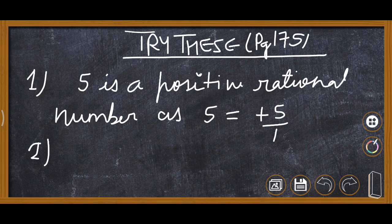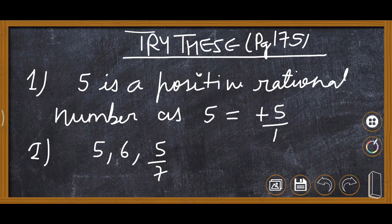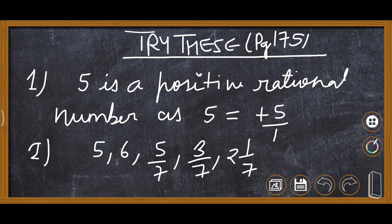And question number 2, list any 5 more positive rational numbers. So we can name 5, 6, 5 upon 7, 3 upon 7, 2 whole 1 upon 7. If no sign is there, this means it is positive rational numbers.